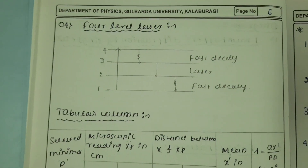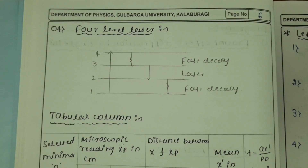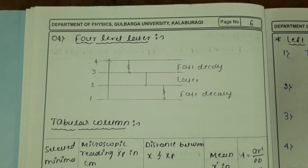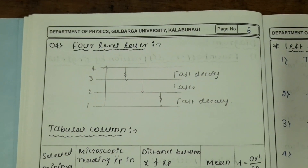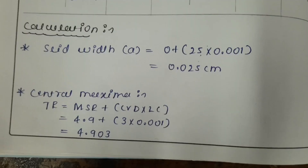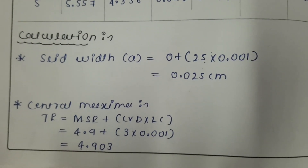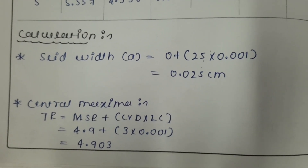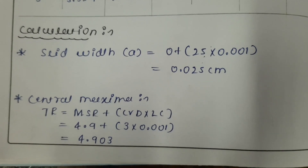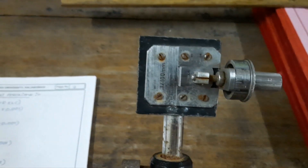This is the helium-neon laser and how it actually works — it is a four-level laser. Now I will show you how to do the experiment. First, I will show you how to calculate the slit width.